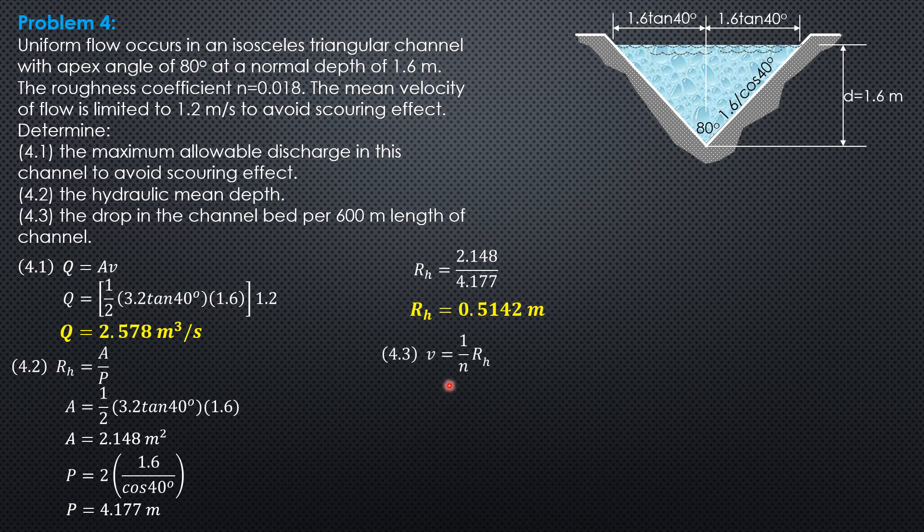Because velocity is 1 over n, hydraulic radius to the two-thirds, slope to the one-half, the slope is n squared times mean velocity squared over hydraulic radius to the four-thirds. So slope is head loss over length of 600 meters. n is 0.018 squared, mean velocity 1.2 squared over hydraulic radius to the four-thirds. So the head loss or the drop per 600 meters is 0.6795 meters.